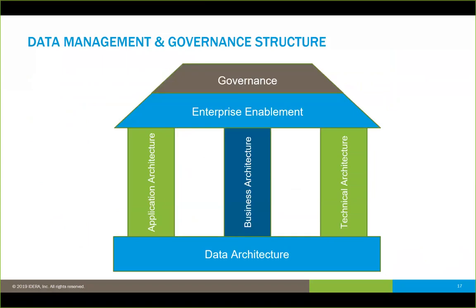You need to have that overall structure grounded in a solid foundation of data architecture, supporting the other pillars of enterprise architecture: business architecture as the central pillar, application architecture, and technical architecture. That's what drives your enterprise enablement overall. By tying all these things together from a data perspective, you're actually able to start accomplishing those strategic goals and objectives from a business perspective as well.